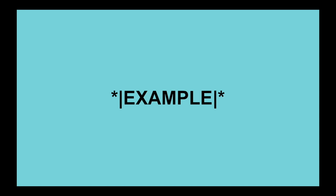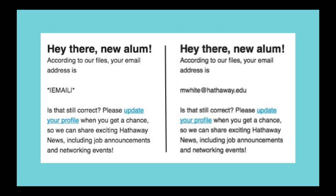When you insert a merge tag into your campaign, MailChimp replaces the tag with the content stored in the corresponding audience field. For example, to include your contact's email address in your email content, you would place the email merge tag where you'd like the address to appear. When your contact receives the campaign, they'll see their own email address where the merge tag was placed.